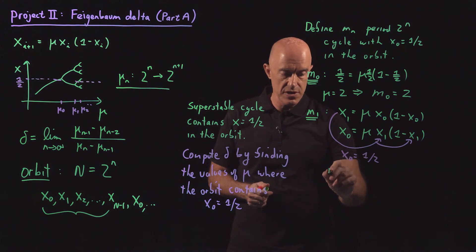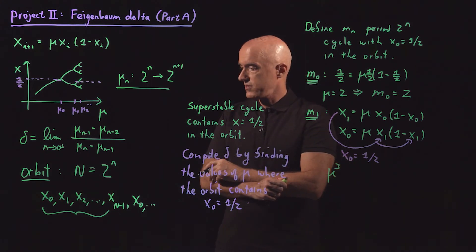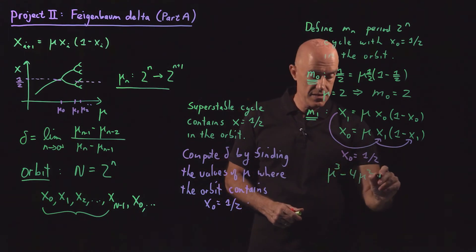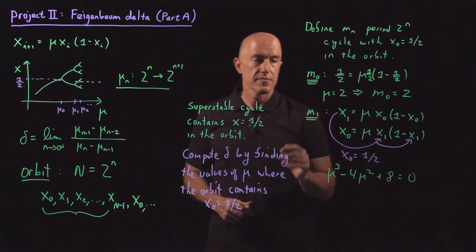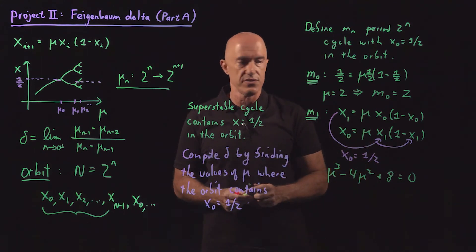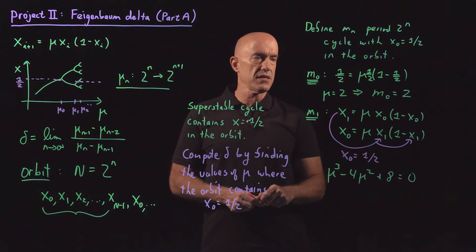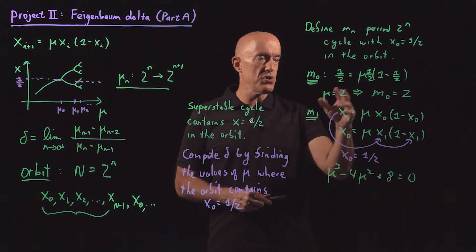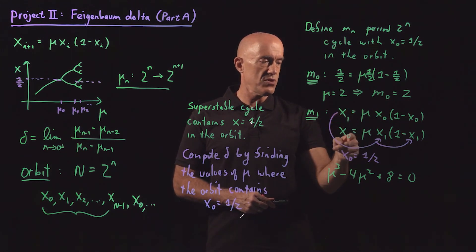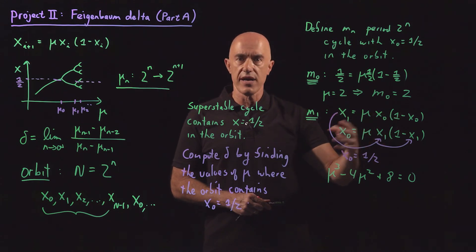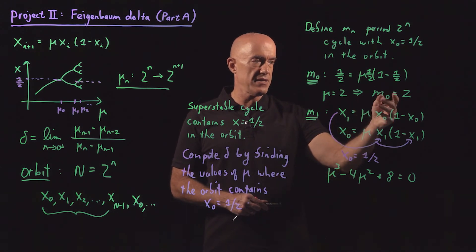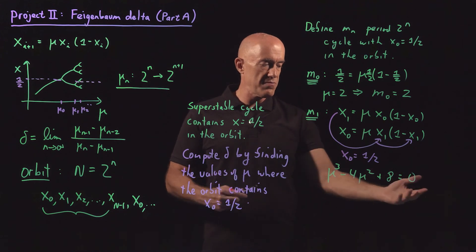What you'll compute is a cubic equation for mu. So mu cubed minus 4 mu squared plus 8 equals zero. So already in the computation of m1, we end up with a cubic equation to solve. You can do this analytically because we know that mu equal to two is a solution. If x1 was equal to x naught, then both of these equations would be satisfied. So then the solution to that is mu equal to two.